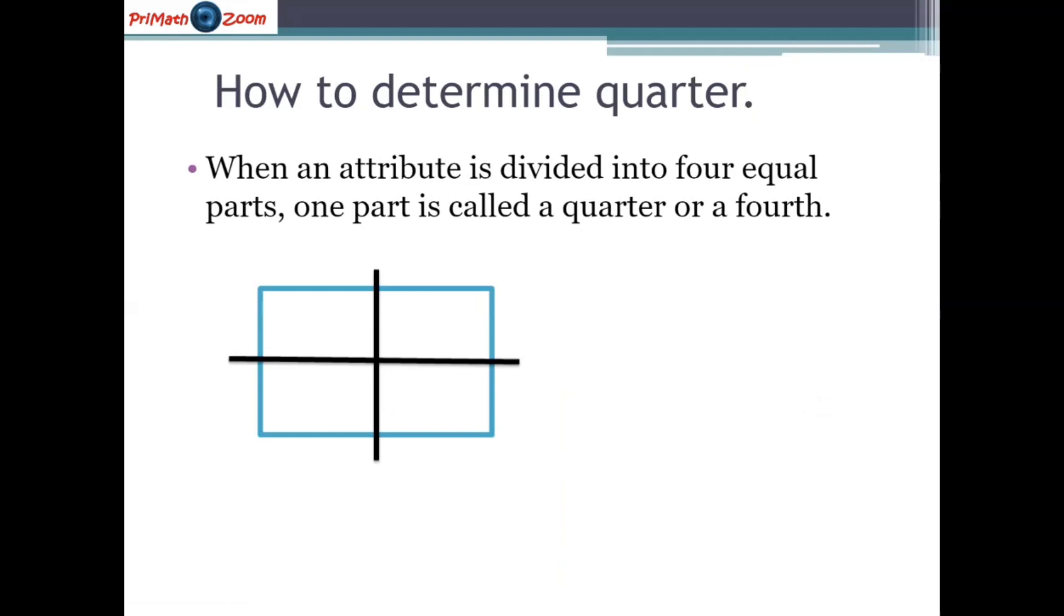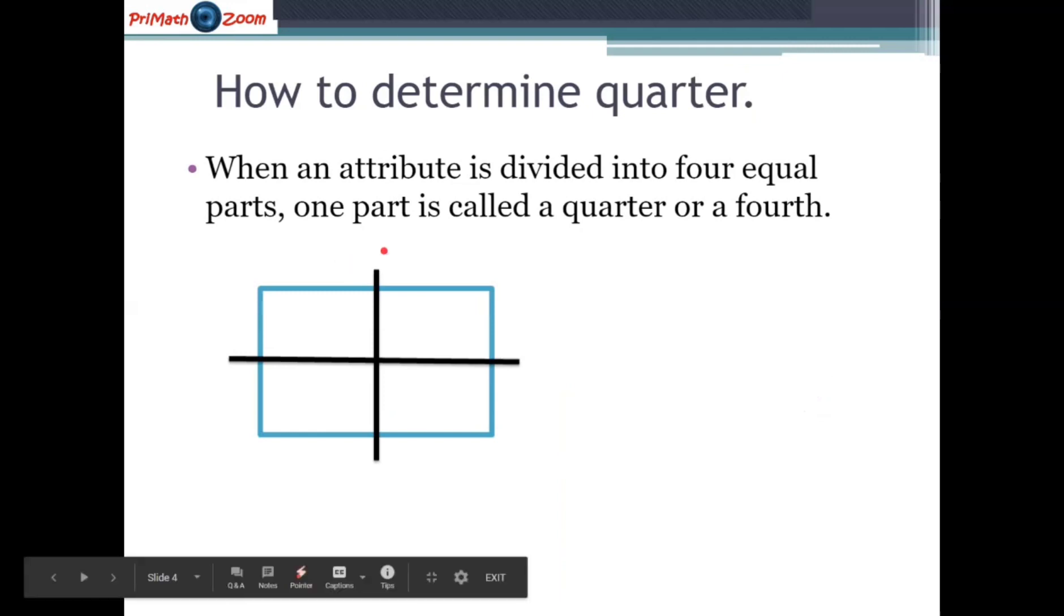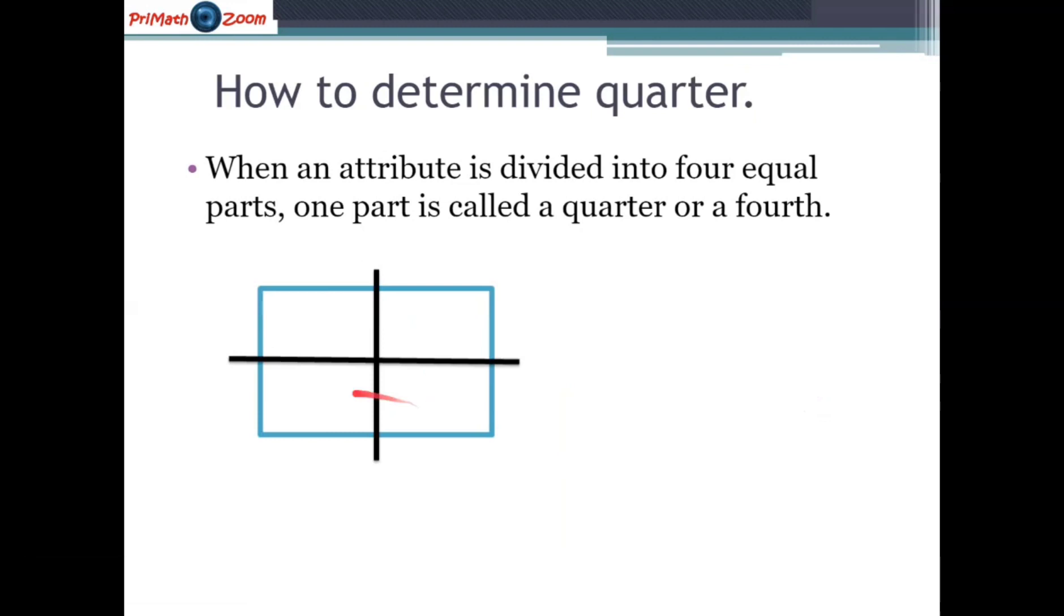This attribute here is divided into four parts. Here one part, two parts, three parts and four parts. But are the four parts equal? Yes, the four parts are equal in size. This means that one of the parts can be called a quarter or a fourth.